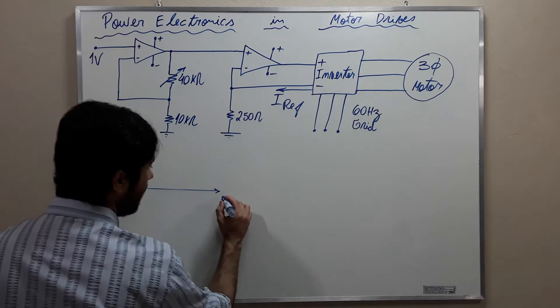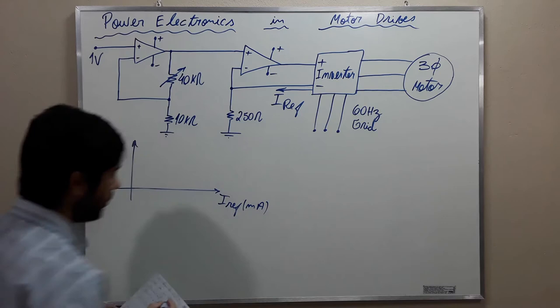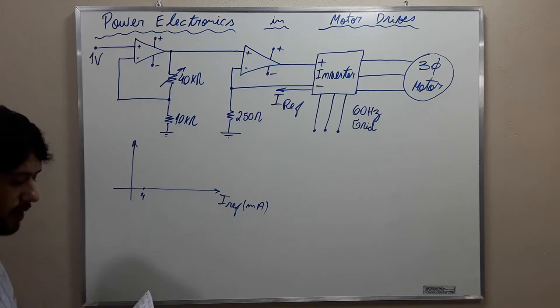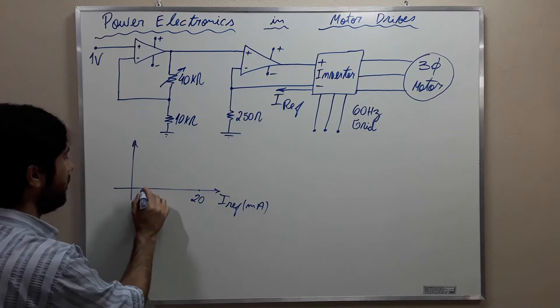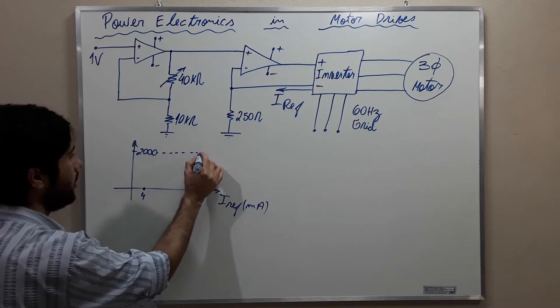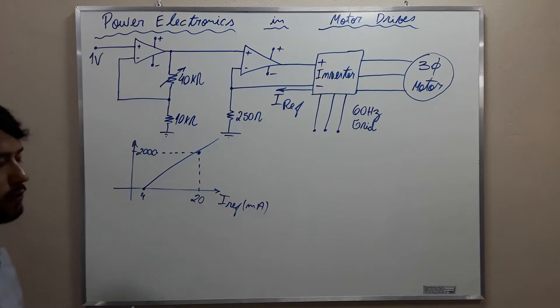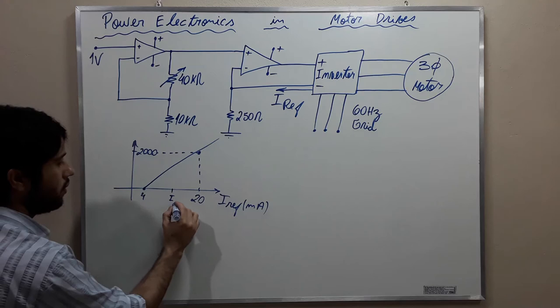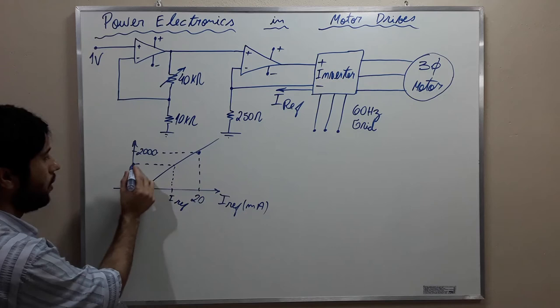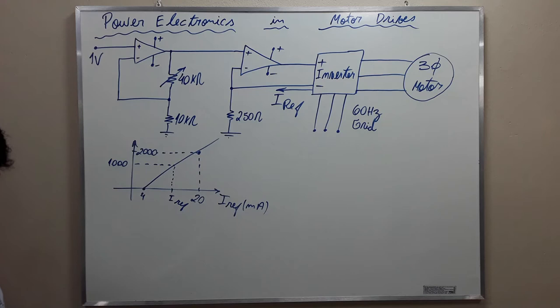I am going to have here a reference current in mA. It begins at 4, as the exercise said, and it finishes at 20 mA. So I have the point (4, 0) and the point (20, 2000). We can connect these and get a line. What we want is the current I_ref for a velocity of 1000 RPM — this is what the exercise wants us to calculate.